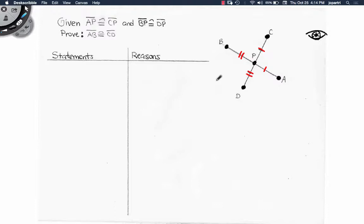So if I look at the picture, I can see the tick marks here. AP is congruent to CP, and DP is congruent to BP. That's given to me.